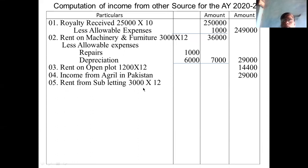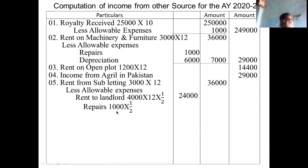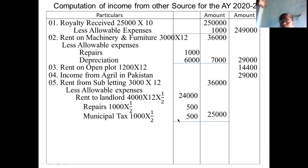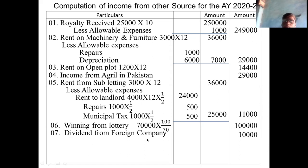Rent from subletting: 3,000 per month, total 36,000. Less allowable expenses — rent paid to landlord 4,000 into 12 into half = 24,000; repairs 1,000 into half = 500; municipal tax 1,000 into half = 500; total deductions 25,000; balance 11,000. Winning from lottery: 70,000 is the received amount, so you gross up — its value is 1,00,000. Dividend from foreign company is taxable: 10,000.